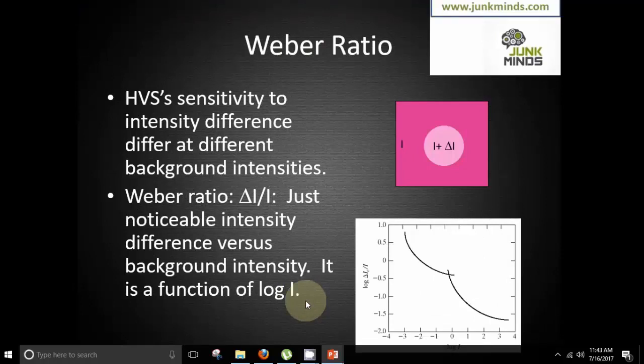The next thing that we have is Weber ratio. Human visual system's sensitivity to intensity difference differs at different background intensity. So basically what exactly is Weber ratio? Weber ratio is delta i upon i, where i is the intensity and delta i is the difference of intensity. Just noticeable intensity difference versus background intensity. It is a function of log i.